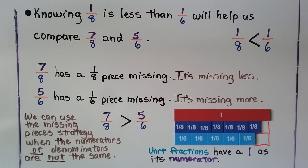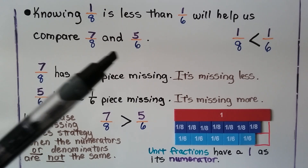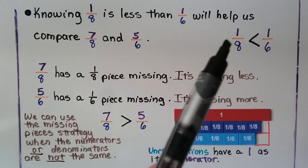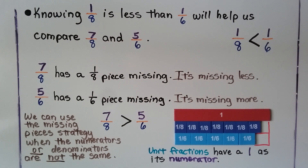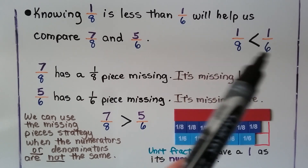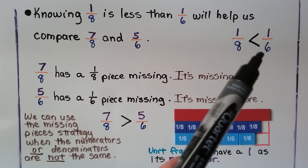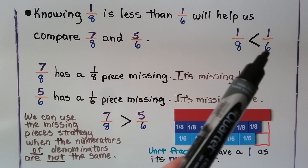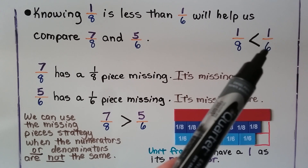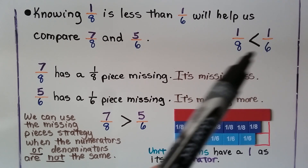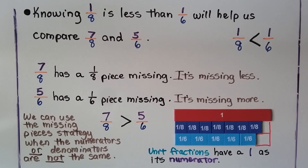Unit fractions can also help us. Knowing one-eighth is less than one-sixth will help us compare seven-eighths and five-sixths. We know the numerators are the same, so we look to the denominator. When the denominators are different sizes, we look to the one with the smaller, lower number — and that's the greater fraction. Six is smaller, it's lower than eight, so we know one-eighth is less than one-sixth.